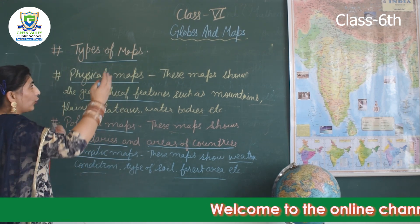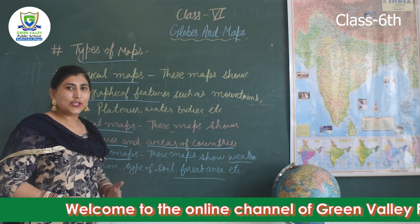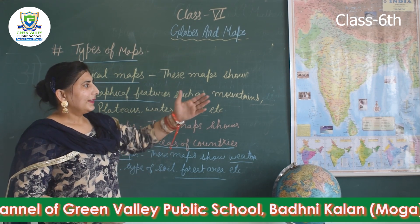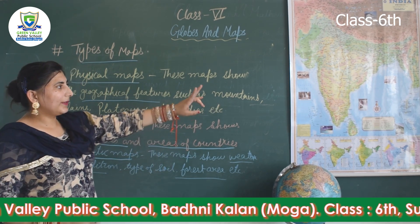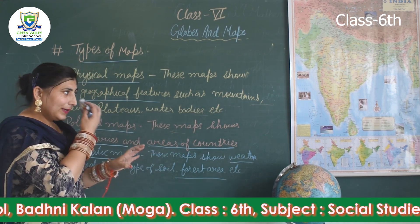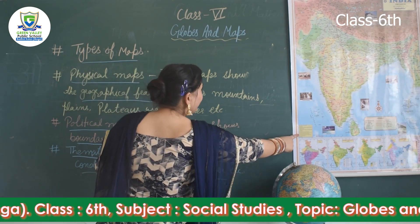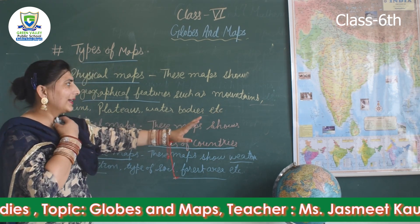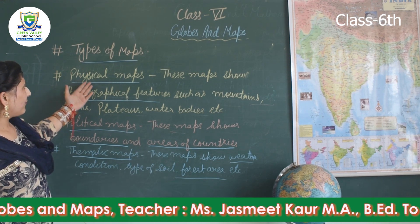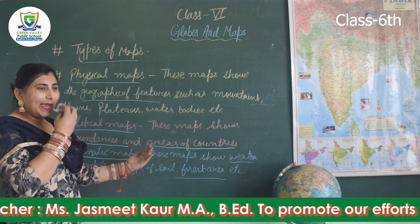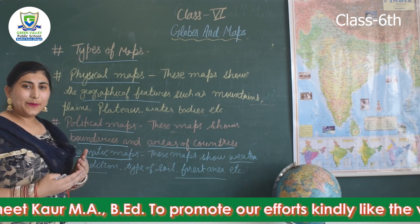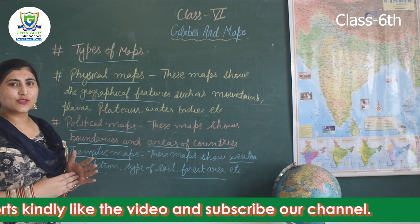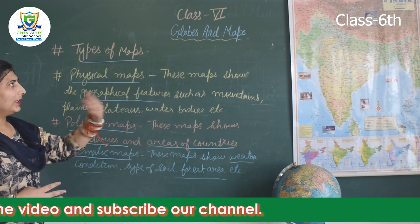To recap: the globe is the true representation of the earth and is a man-made model. The map also shows a variety of countries, but the globe shows the right size and direction of countries, while maps show countries at a smaller, distorted scale. There are three types of maps: physical map, political map, and thematic map. The person who makes maps is called a cartographer, and the art of map making is called cartography.